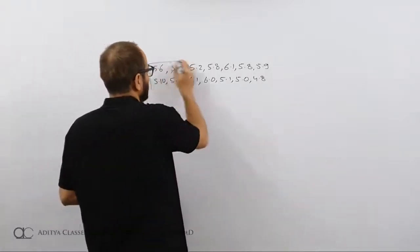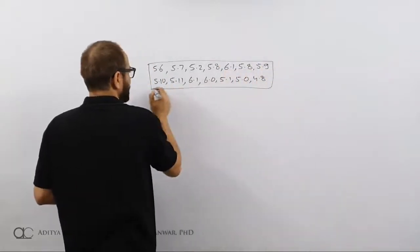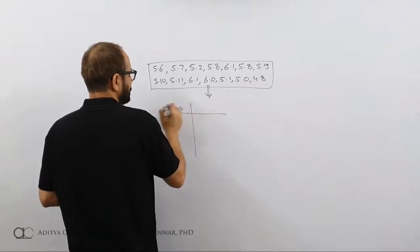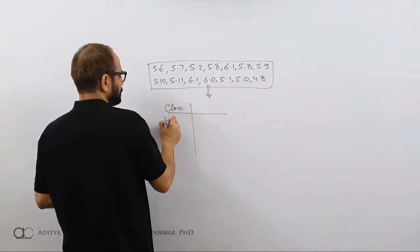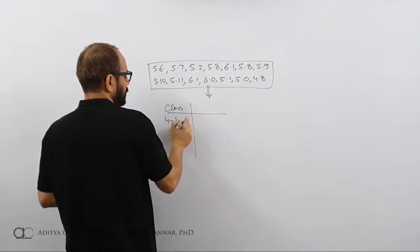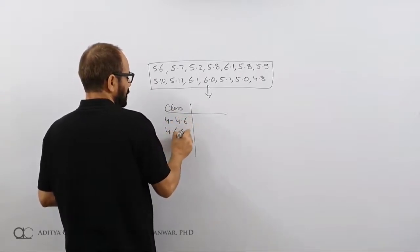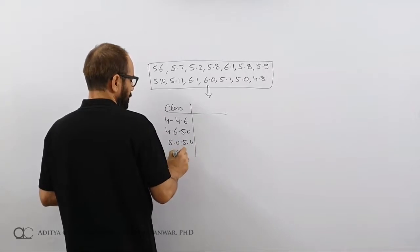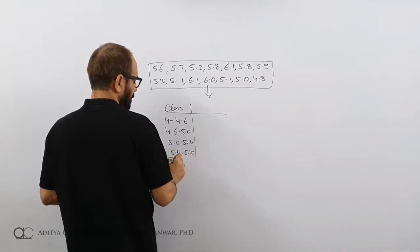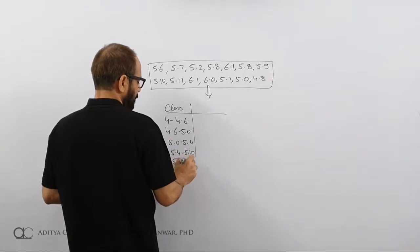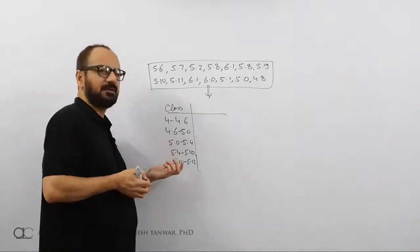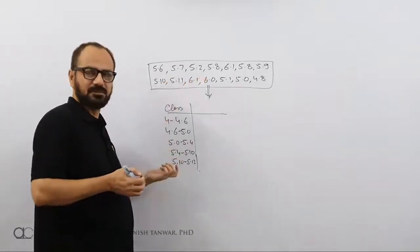So what statistics does is, statistics takes all this data and converts it into meaningful data, which could be classes. Classes could be 4 to 4.6, 4.6 to 5 feet, 5 feet to 5.4, 5.4 to 5.10, 5.10 to 5.12. Now what we have done is we have converted this data into some meaningful classes.